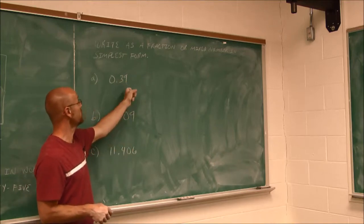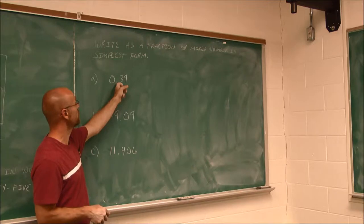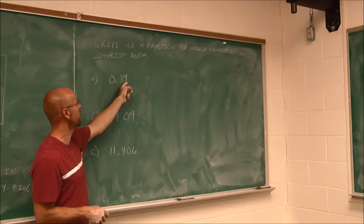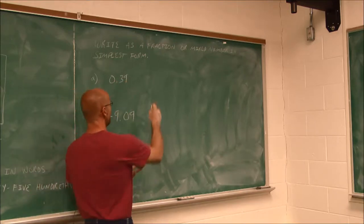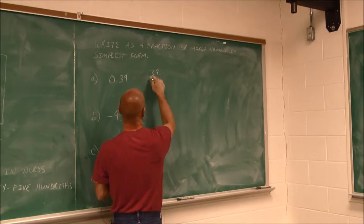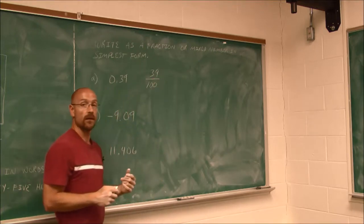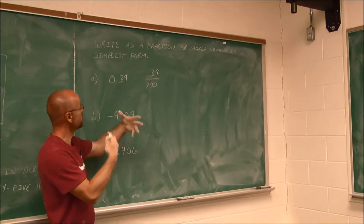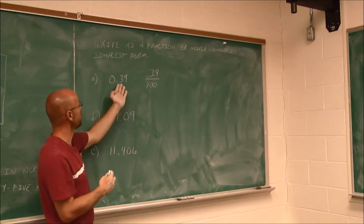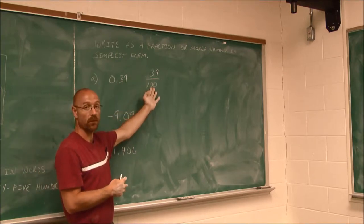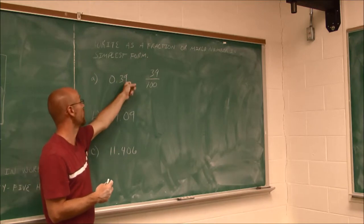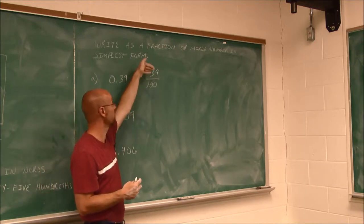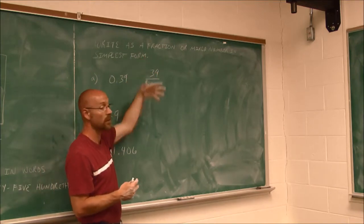I'm going to read this number — the decimal here is 39 hundredths. I'm going to write it as 39 one-hundredths. That's how simple it is to write a decimal as a fraction — we essentially just read it out loud: 39 one-hundredths. They're even read the same.